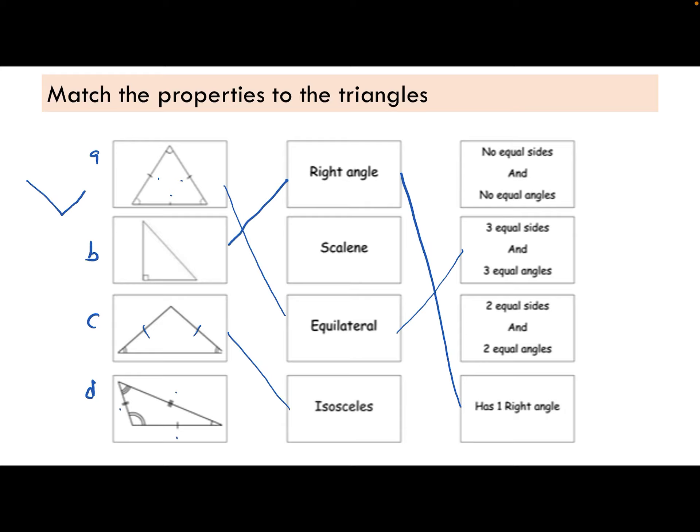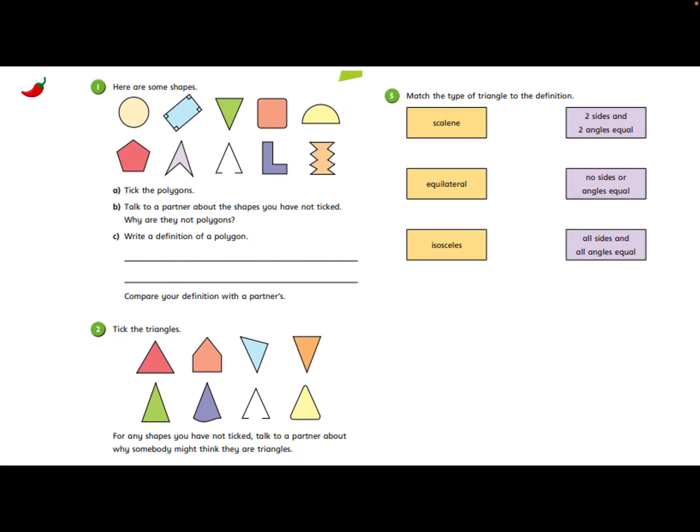This has got three lines, two lines, one line. Isosceles, two equal sides and two equal angles. Of course, because these two are the same. And finally, we have a scalene. Well done if you got those.